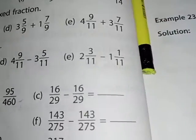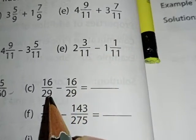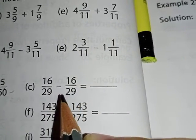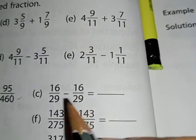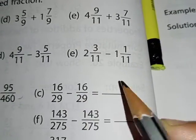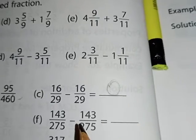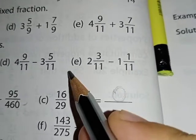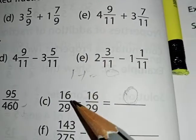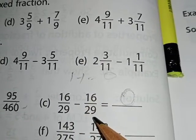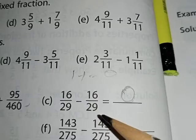Then c, downside we have 16 upon 29 and 16 upon 29. Both the fractions are same, then we get 0, because when we minus 1 minus 1, what do we get? 0, right. Same way here also, 16 upon 29 minus 16 upon 29, both we are doing minus.